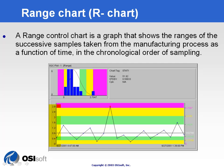To derive those control limits, we need to make use of some statistical tables — the one-node table — which you can find in the appendix of the PiSQC manual, to actually assess what are the limits for the variation.